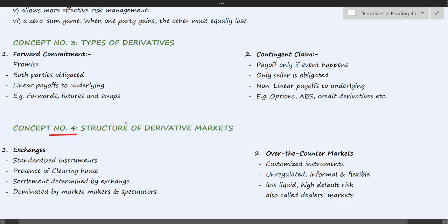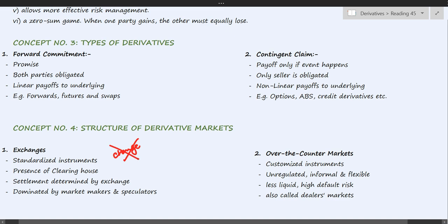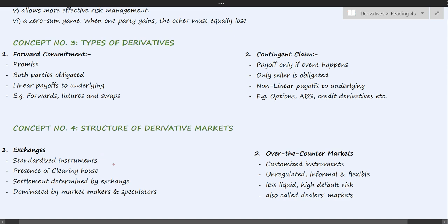Concept number four: the structure of derivative markets. There are two types — exchanges and over-the-counter (OTC) markets. Derivative instruments that trade on exchanges are standardized, meaning the terms of the contract are predetermined and neither the buyer nor seller can change them. This limits flexibility, but the advantage is that standardization creates higher liquidity because everyone knows in advance what is available in the market.